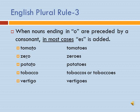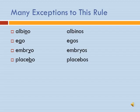English plural rule number three: when a noun ends in O preceded by a consonant, in most cases ES is added. Tomato becomes tomatoes; zero becomes zeroes. Same for potatoes, tobaccos, vertigos. There are exceptions: albino becomes albinos, ego becomes egos, embryo becomes embryos, placebo becomes placebos — just add an S. If you're not sure, look it up.